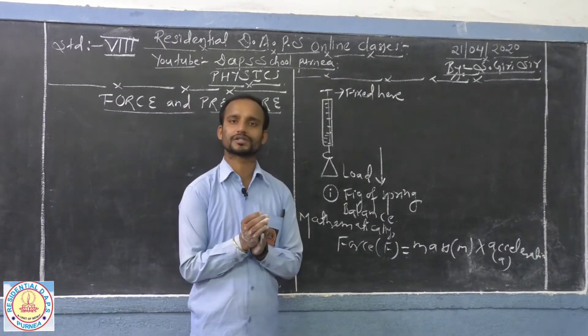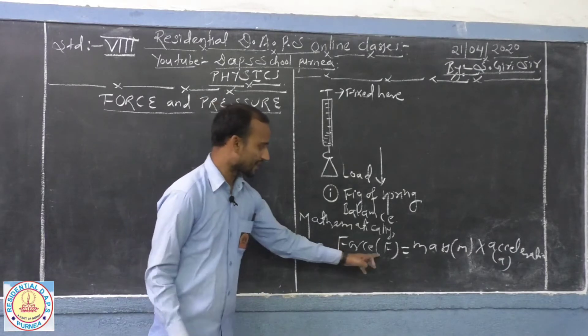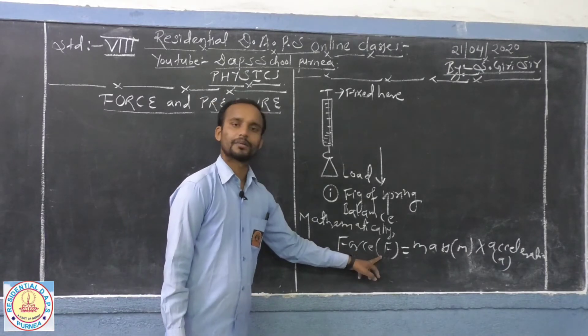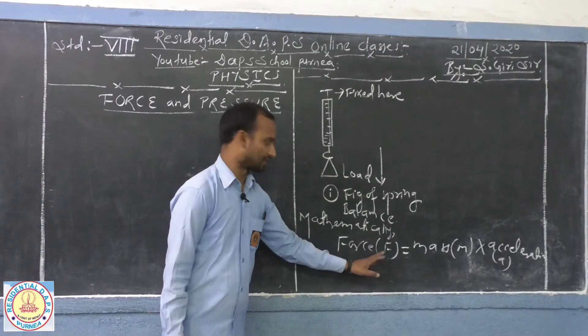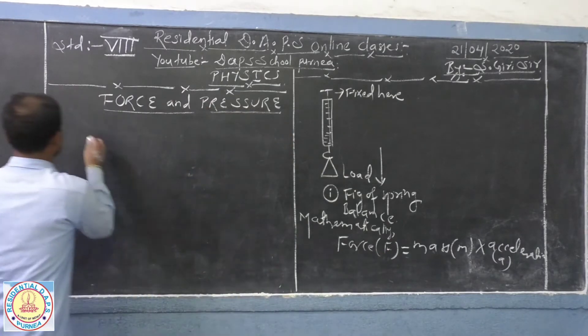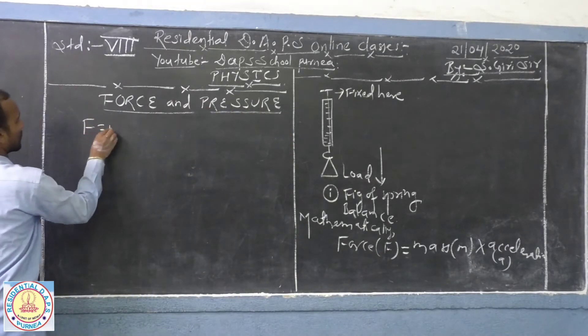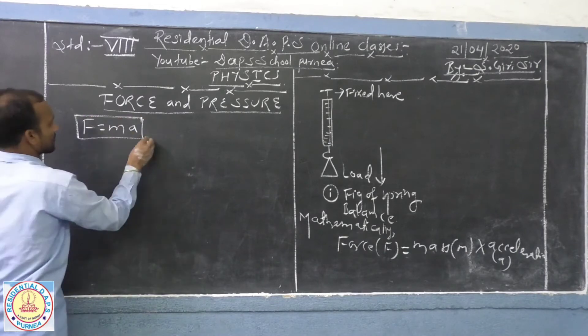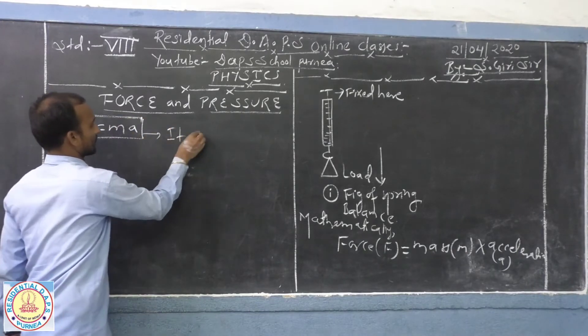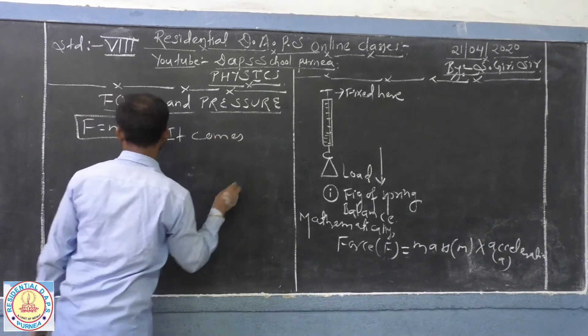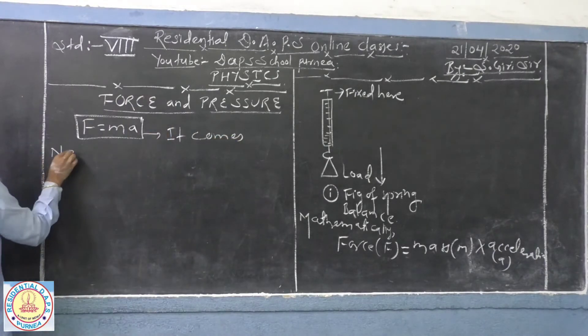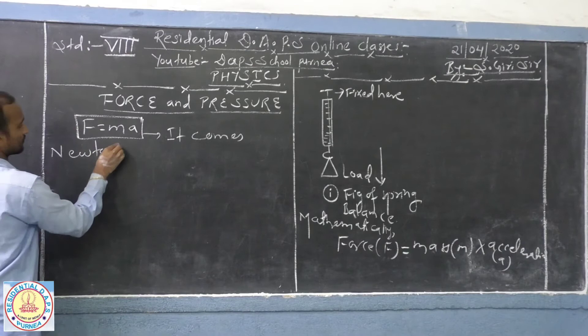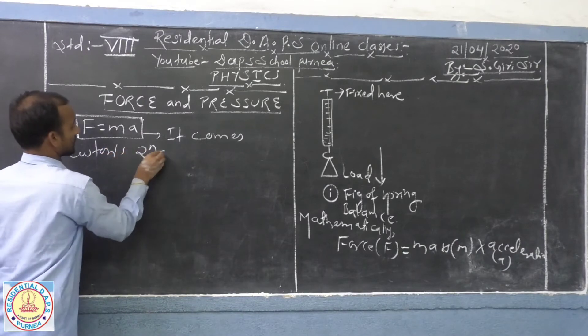When you get the product of this mass and acceleration, you are exactly calculating the magnitude of the force. And this formula F = ma, it comes from Newton's second law of motion.